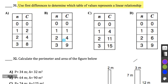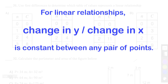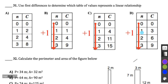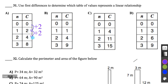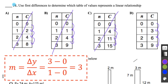Question 31: Use first differences to determine which table represents a linear relationship. For a linear relationship, the change in y over change in x must be constant. The x values go up by 1 in all tables. In table A, y goes up by 2, 2, then 4 — not constant. Table B goes up by 1, 3, 5 — not linear. Table C goes up by 4, 7, 4 — not linear. Table D goes up by 3, 3, 3 — constant slope of 3, so D is the linear relationship.